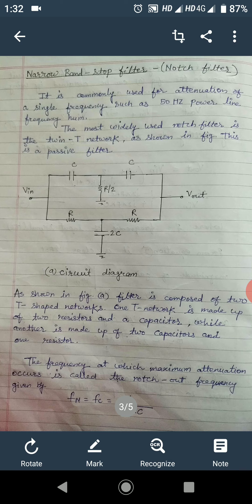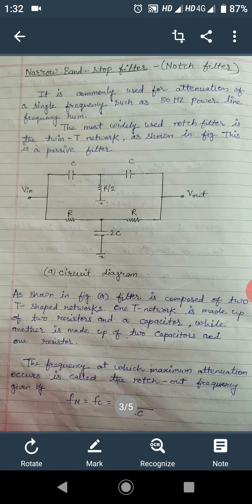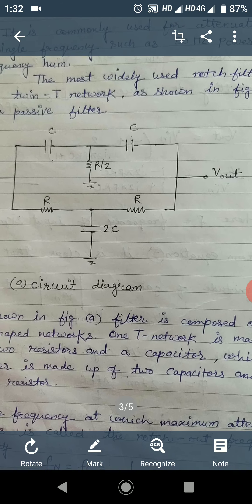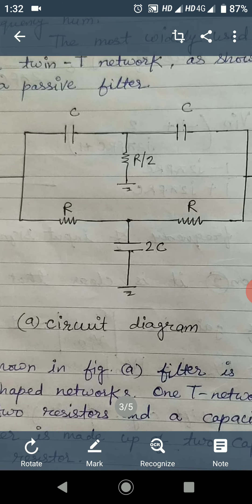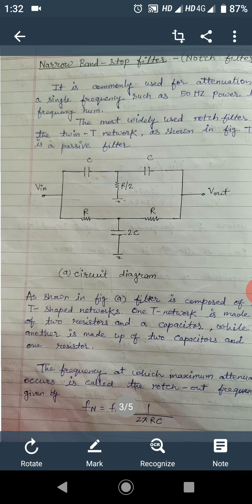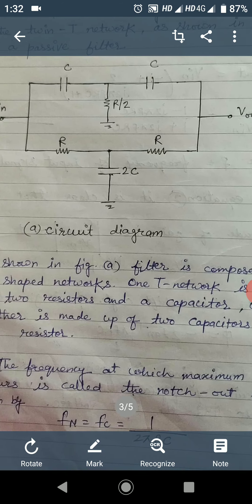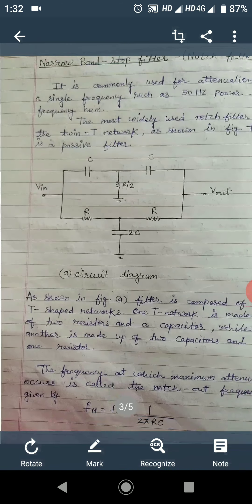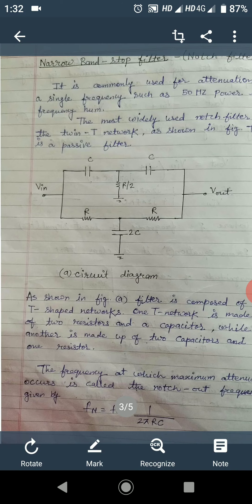The most frequently used notch filter is called the twin-T network, where the filter is composed of two T-shaped networks. One T consists of two capacitors and one resistance, and the other T consists of two resistances and one capacitor. The frequency at which maximum attenuation occurs is called the notch frequency, given by the formula fn equals fc equals 1 upon 2 pi R C.